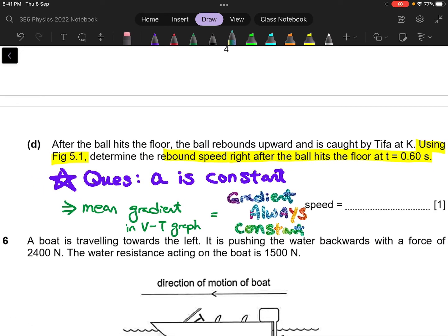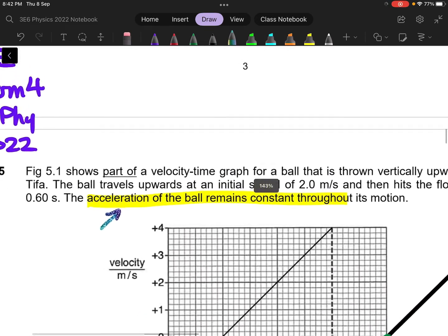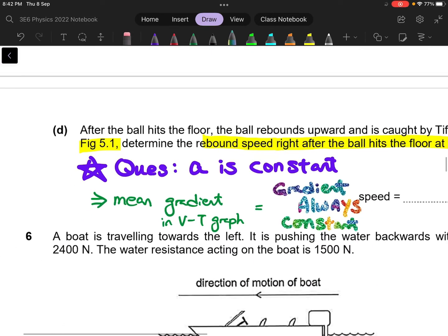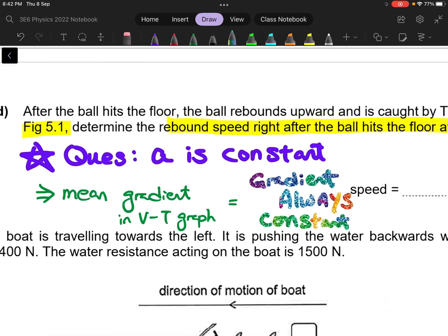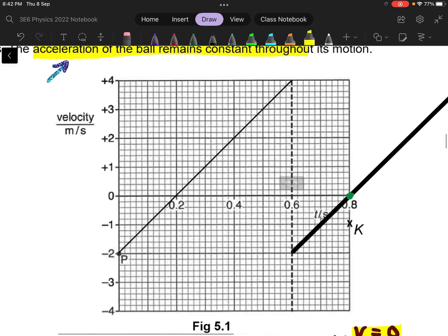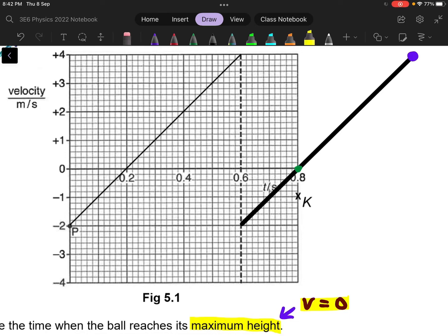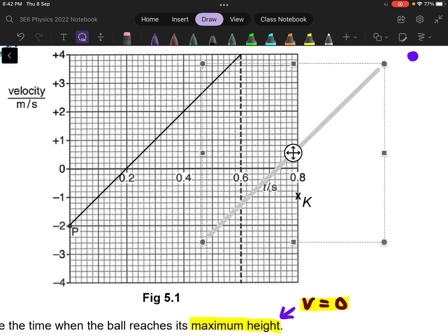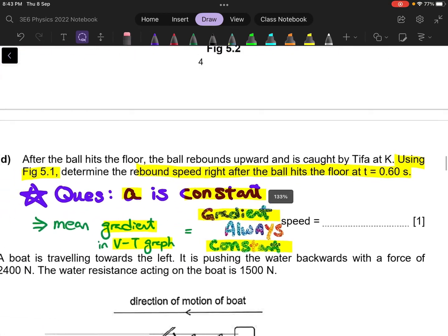So for the last part, you have to actually use figure 5.1 to actually find out what is the rebound speed after the ball hit the floor at 0.6 seconds. So to solve this question, you need to make use of the hint given to you at the beginning of the context and that is the acceleration of the ball is going to remain constant throughout its motion. So you need to tap onto the knowledge that acceleration is given by the gradient of a VT graph. And if now I tell you that acceleration is constant, it means that the gradient of this entire graph is going to be constant as well. So since you know the slope of the initial part of the graph, what you need to do is that you need to actually draw another parallel line. And this line should cut 0.6 somewhere. So it can be either here, it can be either here, it can be either here. So where to put this parallel line becomes the next part of the challenge.